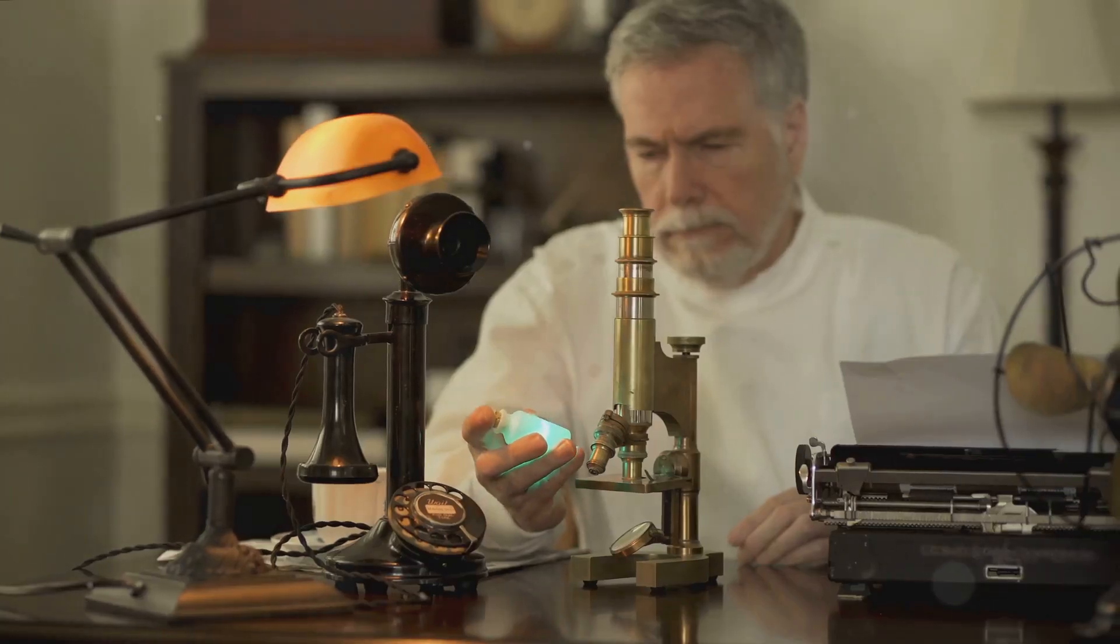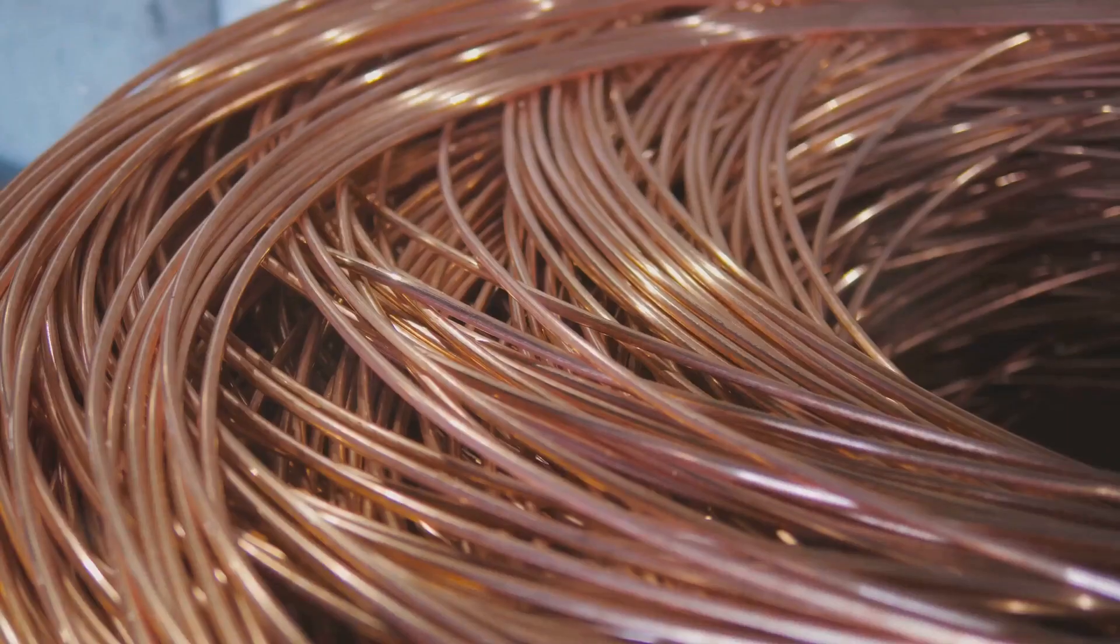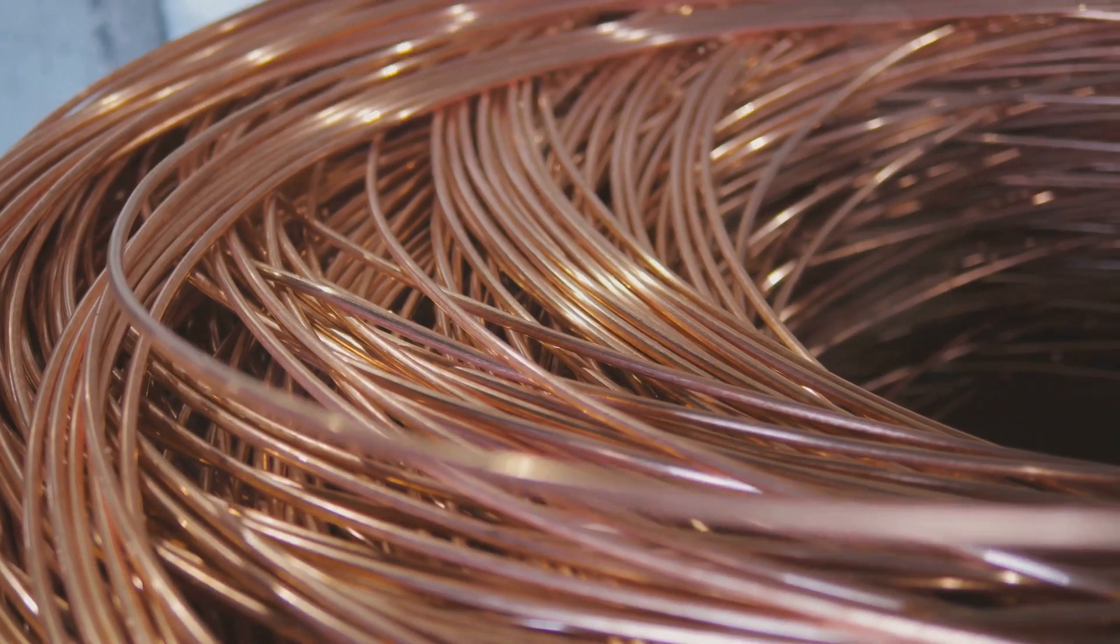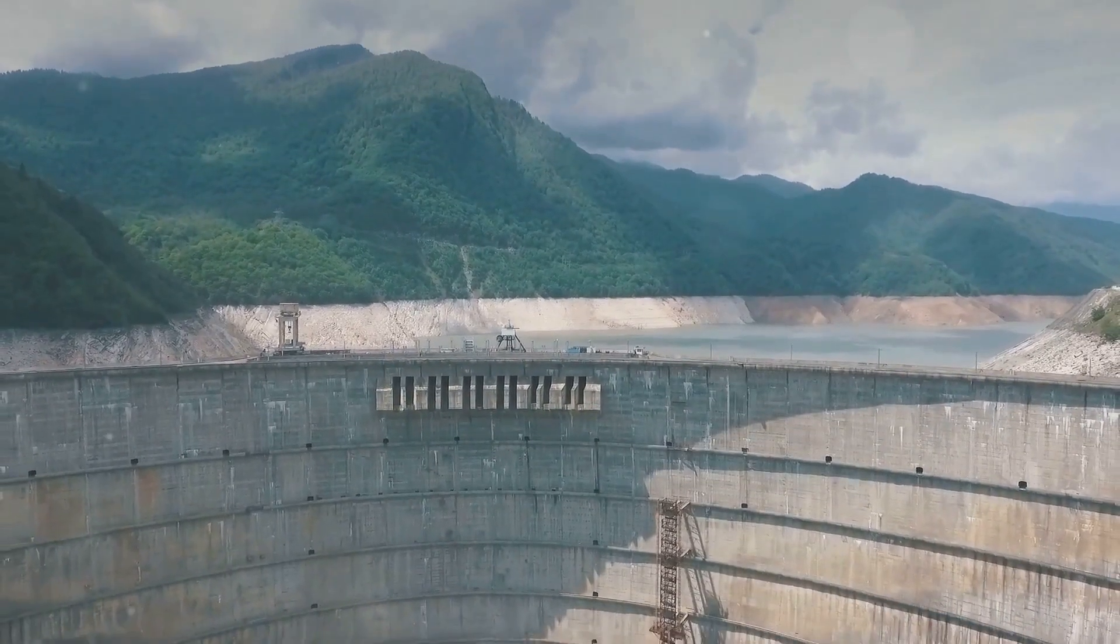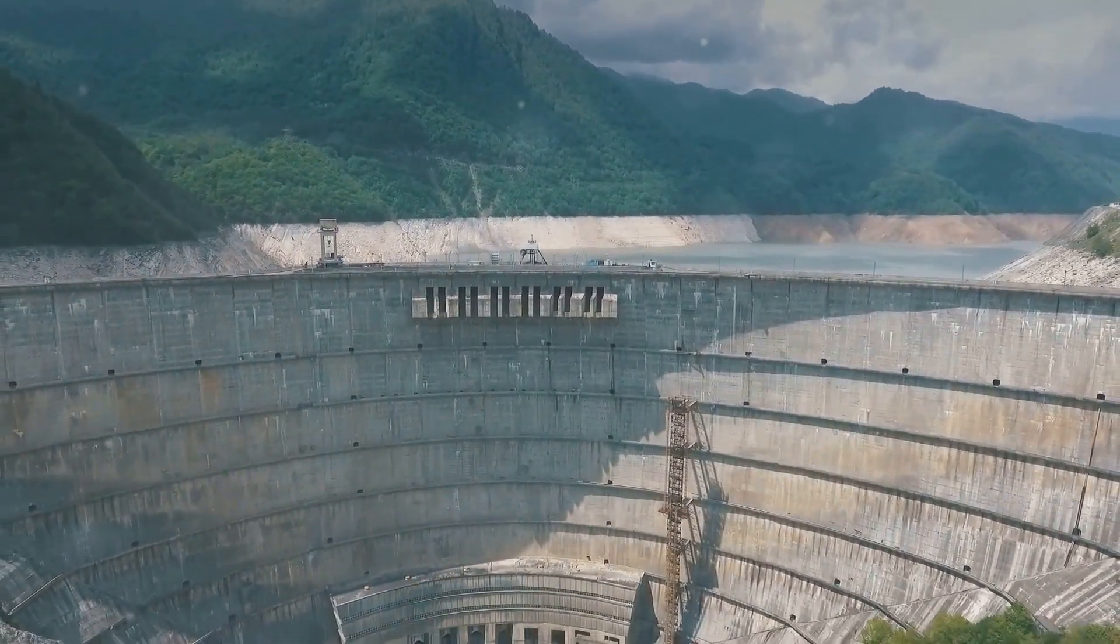Back in the 1830s, a brilliant scientist named Michael Faraday discovered something phenomenal. He found out that when you change the magnetic environment of a coil of wire, it creates voltage across the wire. This process is what we call electromagnetic induction, and it's the fundamental principle behind how electricity is generated today.